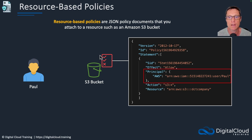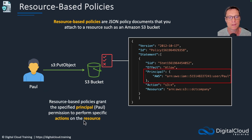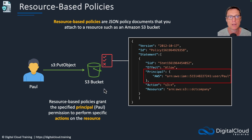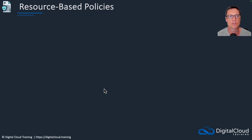In this example, the policy is attached directly to an S3 bucket and grants Paul the permission to perform specific actions on the resource — Paul being the principal, identified by his user account ARN. Paul is allowed to make any S3 API calls on that bucket. That's an example of a resource-based policy.